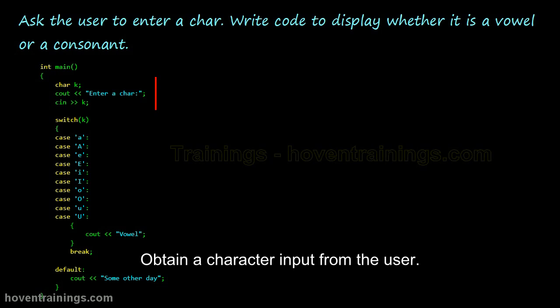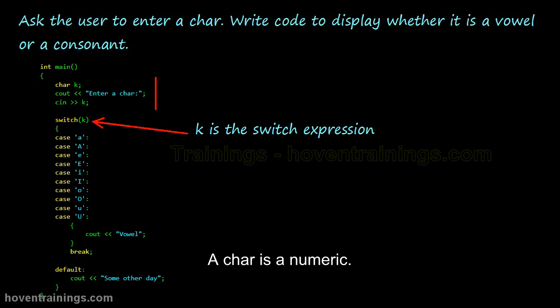Obtain a character input from the user and store it in a variable called k. k is a numeric. Compiler treats it as an ASCII value, so we can use it as the switch expression. All these case labels fall through. Every vowel input will fall through here.